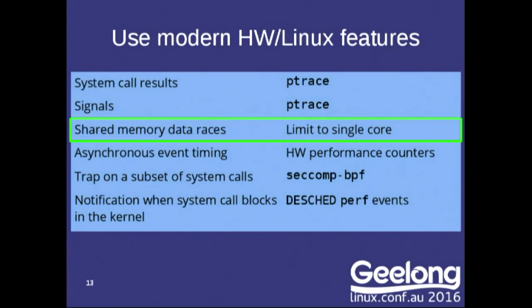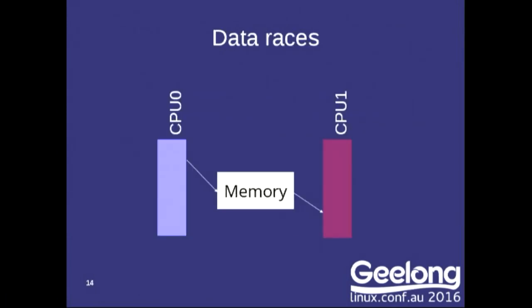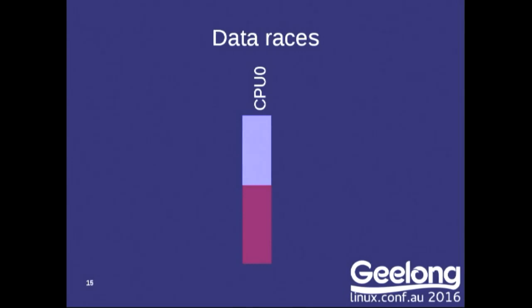Another source of non-determinism is data races caused by multiple CPUs running simultaneously — where one CPU writes to memory and another reads from the same address. Depending on the relative speeds of those CPUs, the read might get the new value or the old value. The only practical way to handle this in software is to record the results of read instructions, which is incredibly expensive and requires code instrumentation. So we throw that problem out the window by running all the code on a single core, one thread at a time. We support multi-threaded programs, but we don't run them in parallel. Firefox is only a little bit parallel, so this works fine for us.